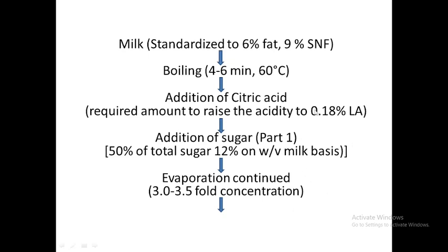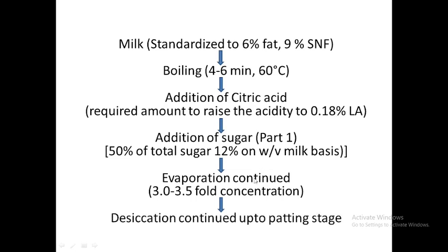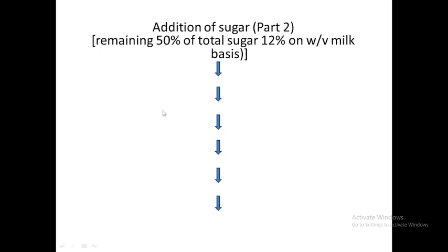For milk cake, we take milk and boil it — the same citric acid addition is there as well. But here we add 12 percent sugar in two parts. In the case of kalakand we were adding only seven to eight percent, but for milk cake we add 12 percent. First part is added just after the citric acid, then we continue operating, and the second six percent is added at the point when consistency has changed — the same way as in burfi.